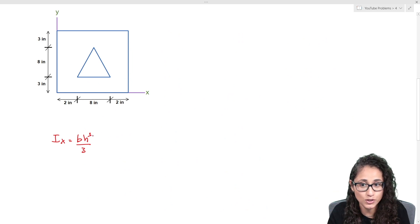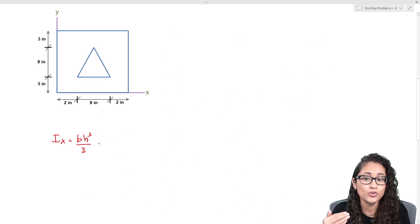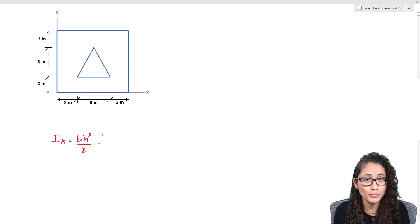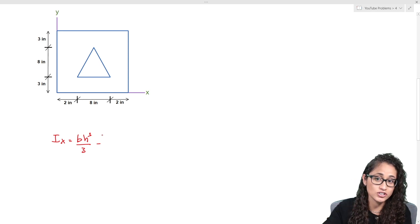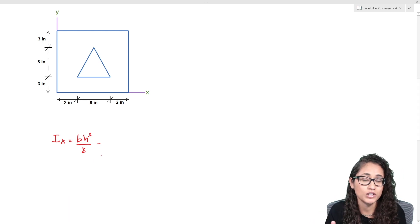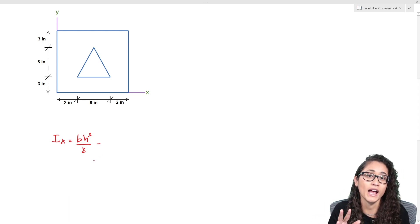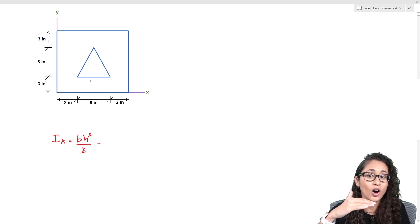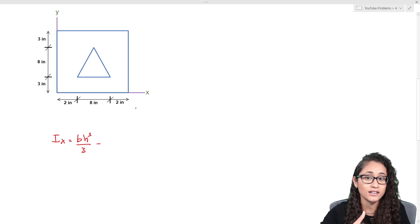Now let's look at the triangle. The triangle is inside the rectangle, so we actually have to subtract it. Whenever you have a shape inside another shape, make sure you do minus. To find the moment of inertia about the x-axis for the triangle, we have to use the parallel axis theorem because the triangle is not on the x-axis.